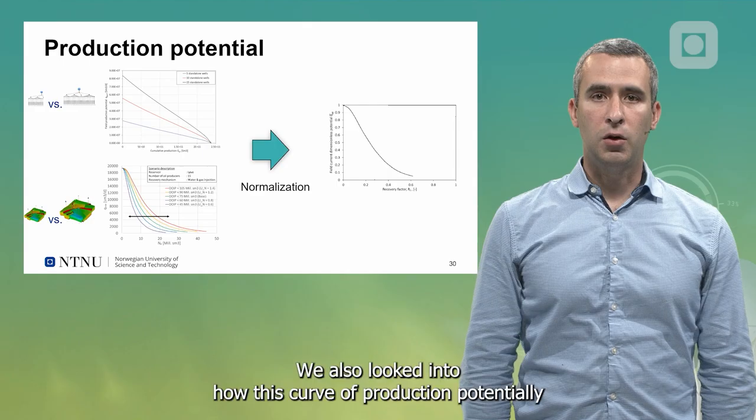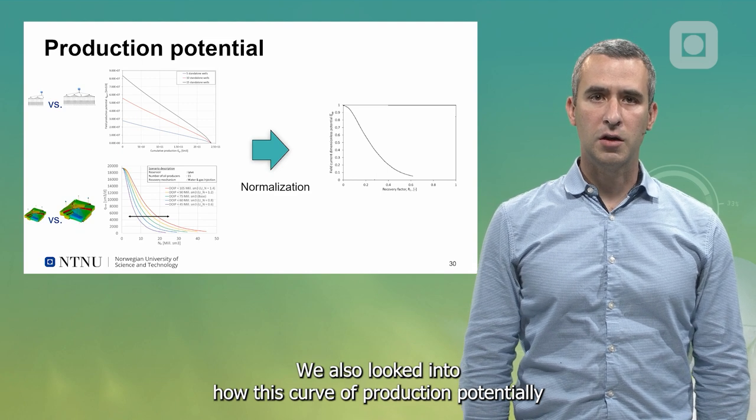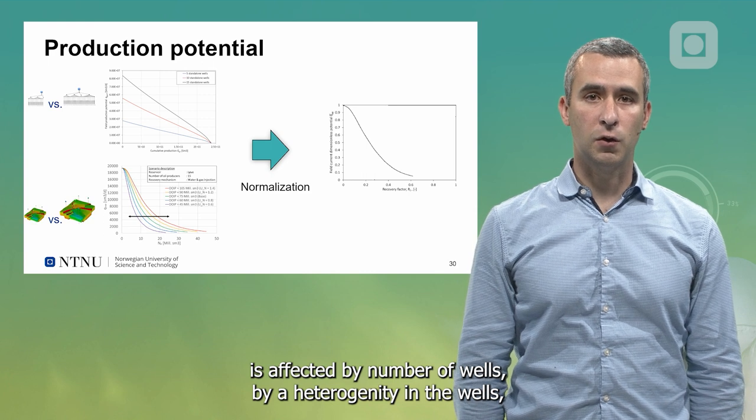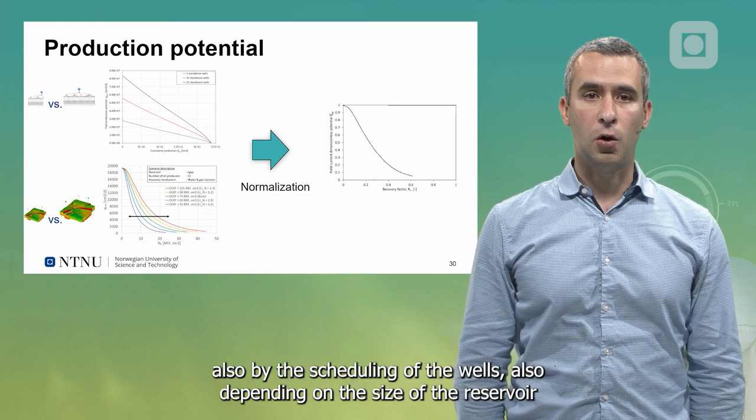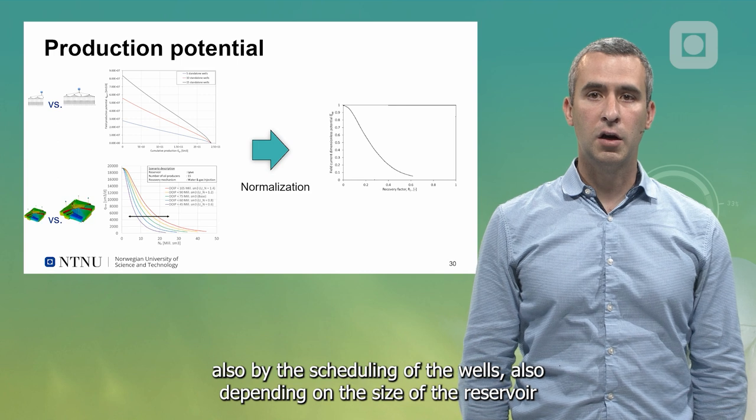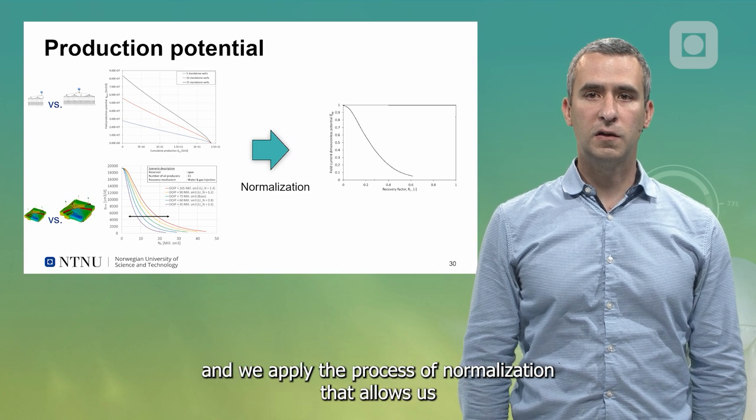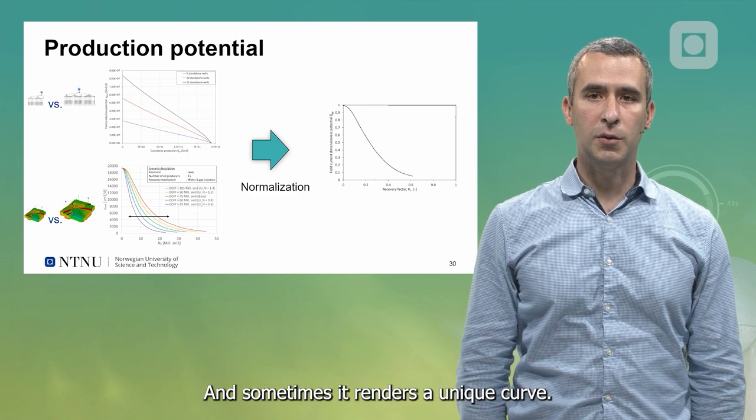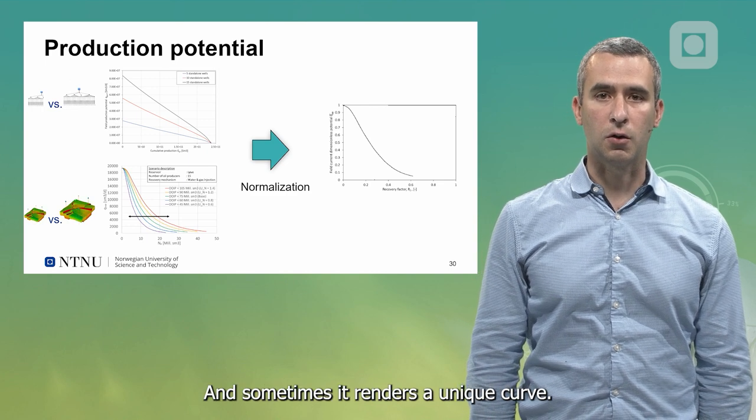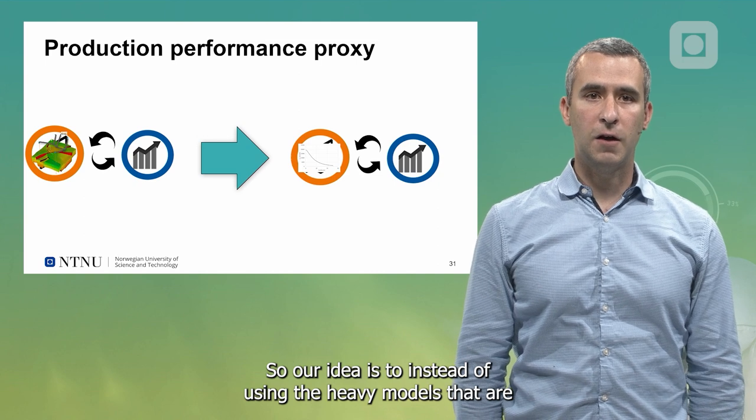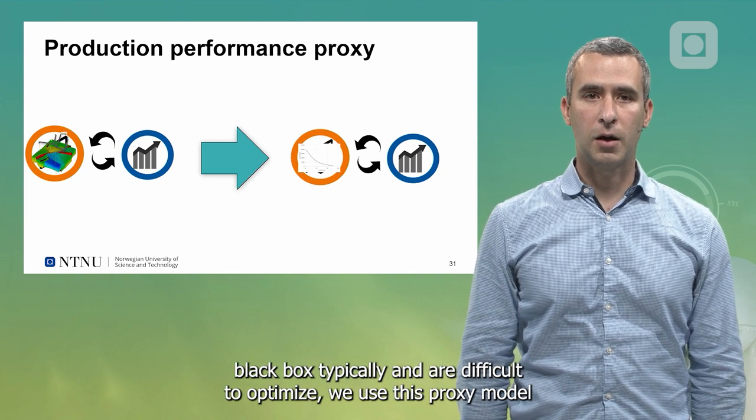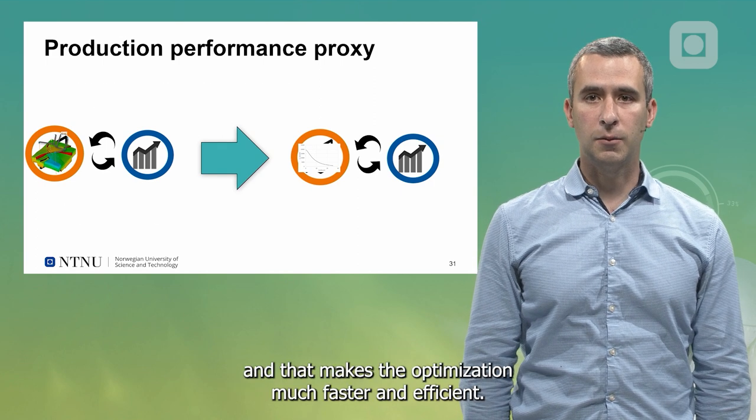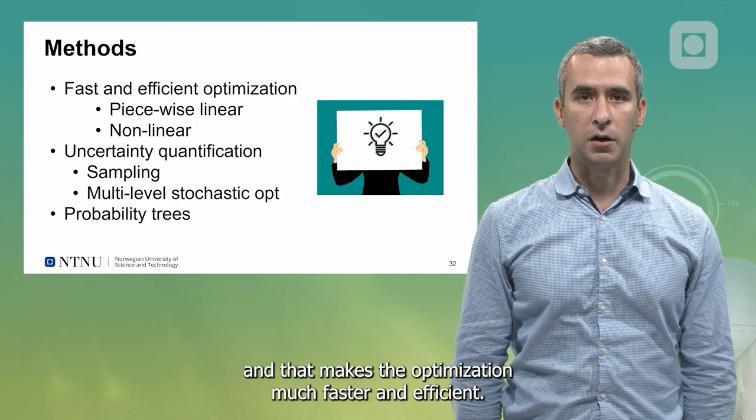Then we use that proxy model to generate production profiles without using the original heavy model. We also looked into how this curve of production potential is affected by number of wells, by heterogeneity in the wells, by the scheduling of the wells, and by the size of the reservoir. We applied a process of normalization that allows us to capture all of these effects and sometimes it renders a unique curve. So instead of using the heavy models that are black box typically and difficult to optimize, we use this proxy model which makes the optimization much faster and efficient.